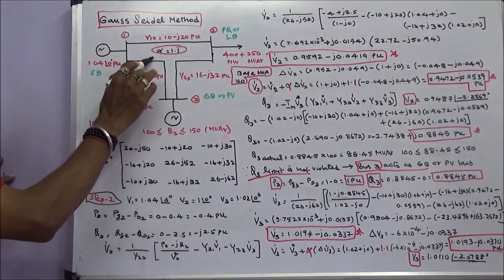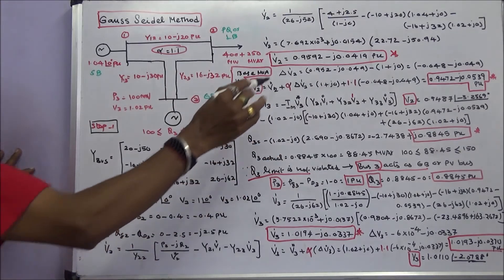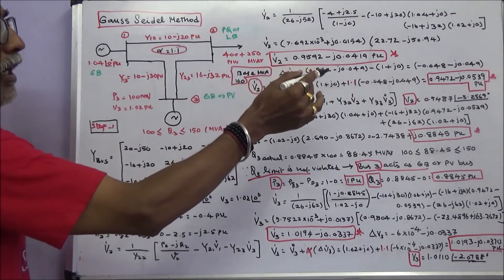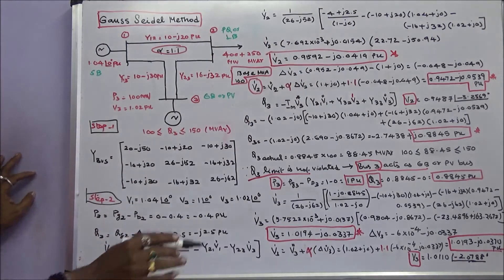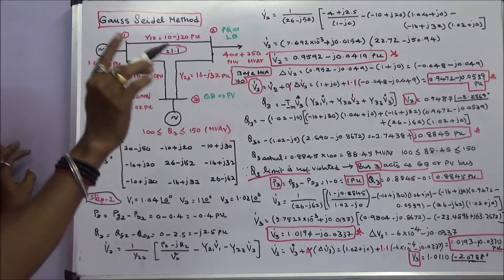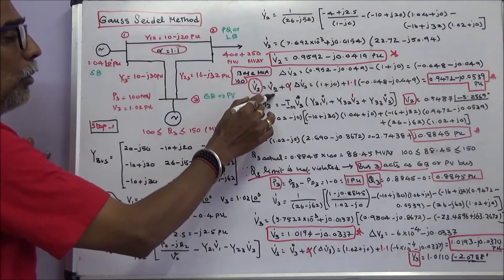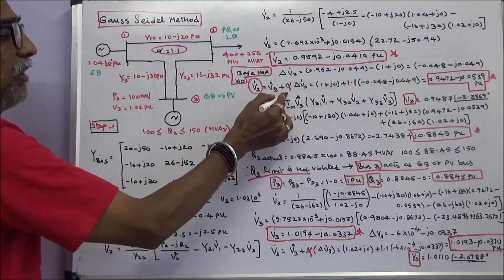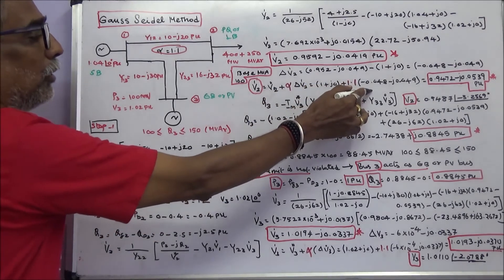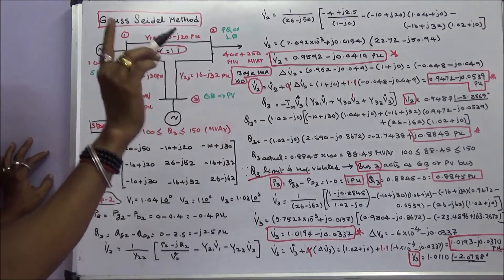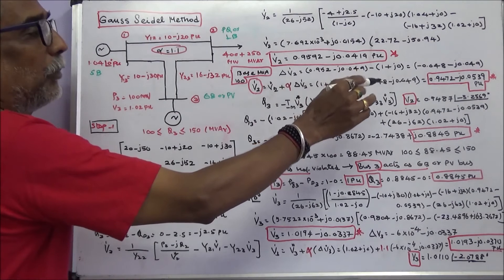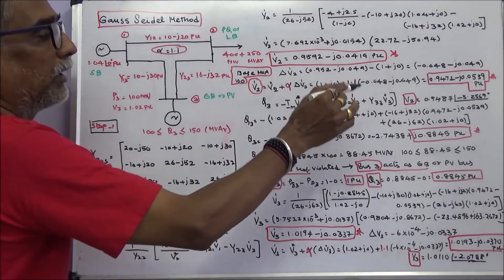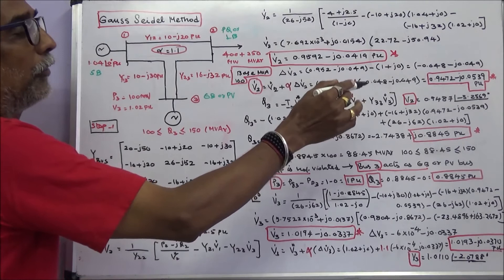The acceleration factor is given as 1.1. The difference between the calculated value and the assumed value is −0.0480 − j0.0419. The accelerated first iteration value is: V2_initial + acceleration_factor × difference = (1 + j0) + 1.1 × (−0.0480 − j0.0419). The accelerated V2 first iteration value is 0.9472 − j0.0539 per unit in rectangular form, or 0.9487∠−3.2569° per unit in polar form.